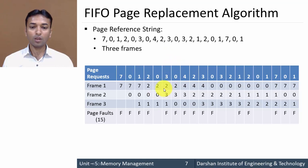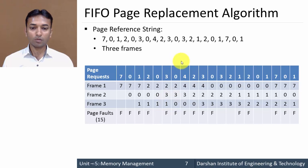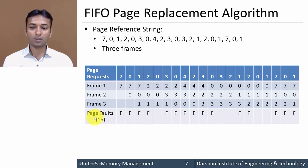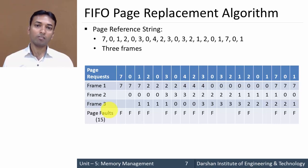Next page 0 arrives; the oldest among pages 2, 3, and 1 is page 1, so we remove page 1 and place page 0 in frame 3 - page fault. In this way, all pages are placed according to the FIFO rule, and each page fault is labeled F. Counting all the page faults, we get a total of 15 page faults for this reference string with 3 frames using the FIFO algorithm. This is how the First In First Out page replacement algorithm works - the oldest page is always removed when a new page arrives.